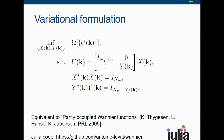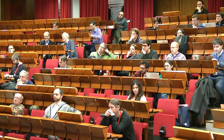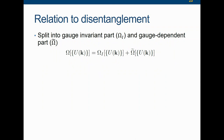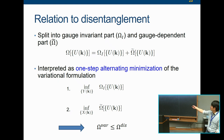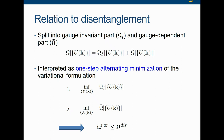The relation to the disentanglement procedure is the following. In the disentanglement procedure, you split the functional into the gauge-invariant part and the gauge-dependent part, and you do alternating minimization — minimize the gauge-invariant part, then the gauge-dependent part, back and forth, hoping this leads to a convergent algorithm. However, the actual implementation of the disentanglement procedure only does this in one step — gauge-invariant then gauge-dependent, done. So it is actually a one-step realization of the alternating minimization for the variational problem. Therefore, the total spread of the variational formulation is guaranteed to be no greater than the spread of the disentanglement procedure.